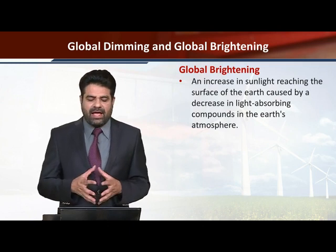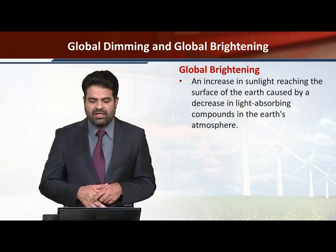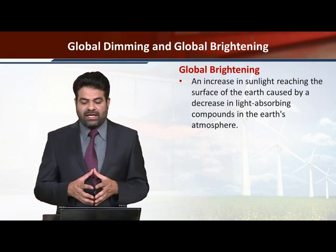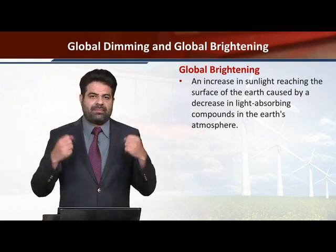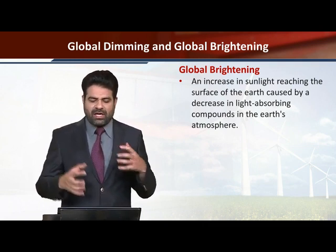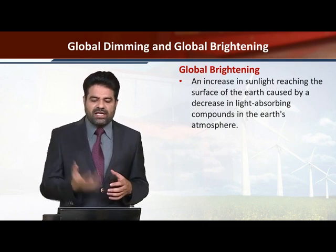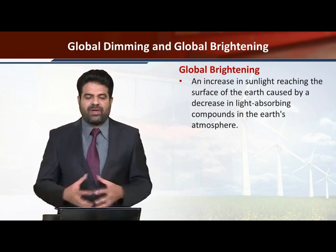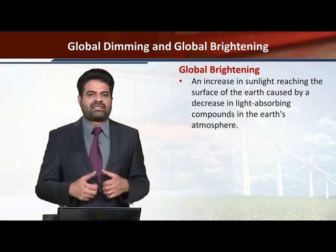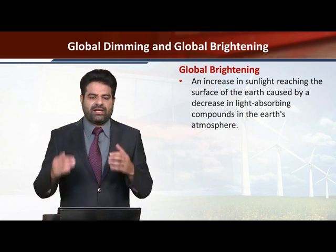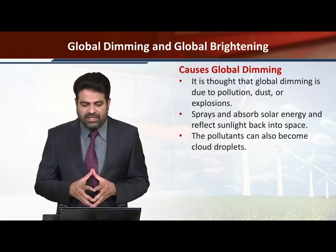Global Brightening is an increase in sunlight reaching the surface of the earth, caused by a decrease in light-absorbing compounds in the earth's atmosphere. Where there is more brightening, sunlight is reaching the earth and light-absorbing compounds are decreasing, allowing light to reach the earth at a maximum level. It is thought that global dimming is due to pollution.